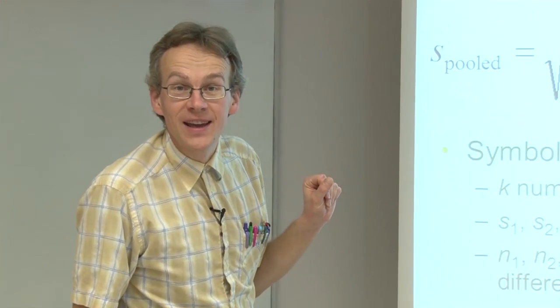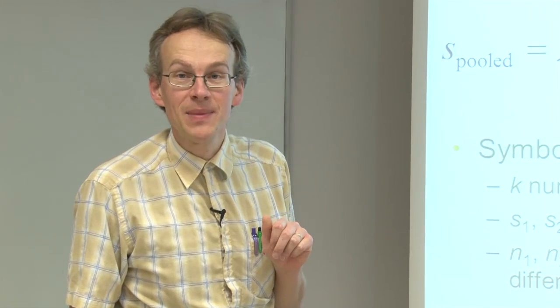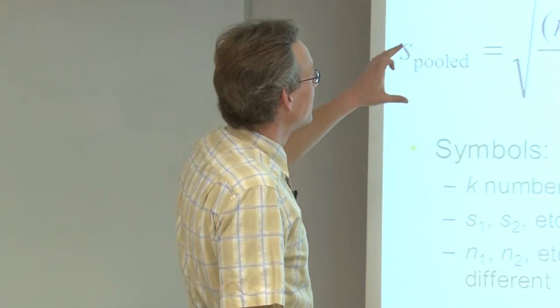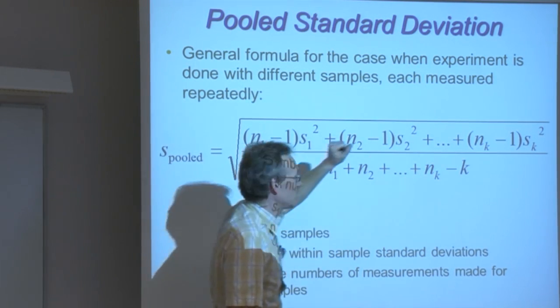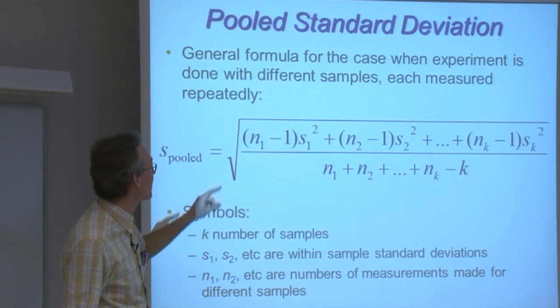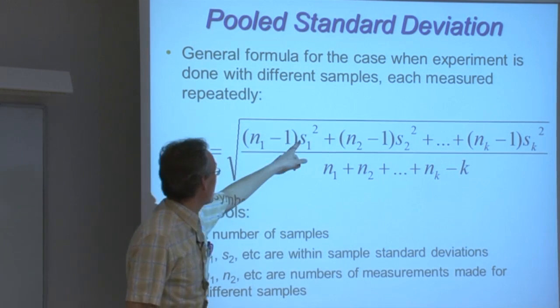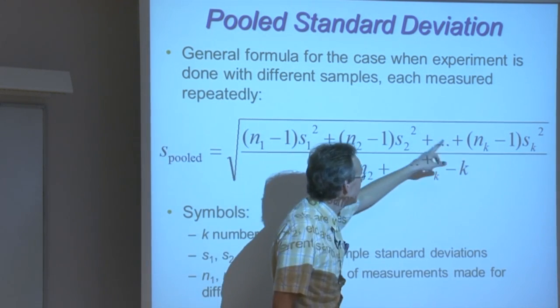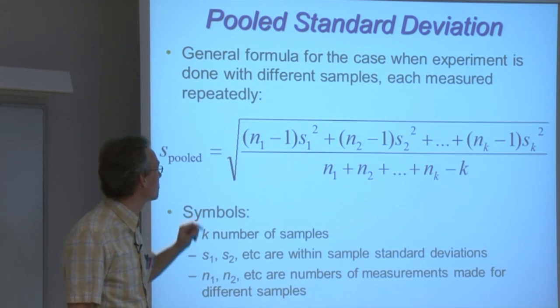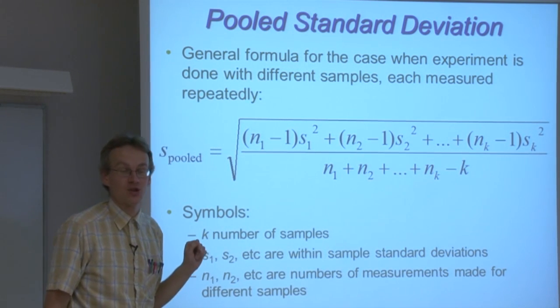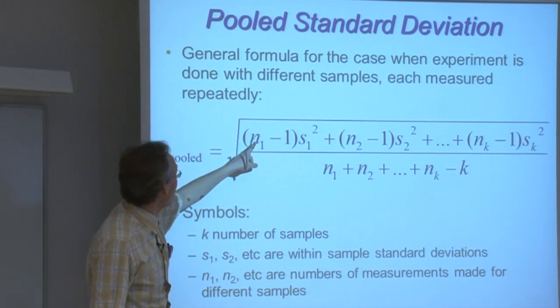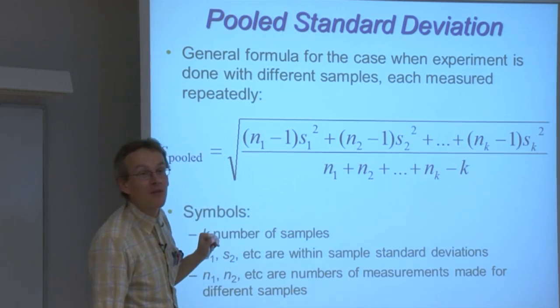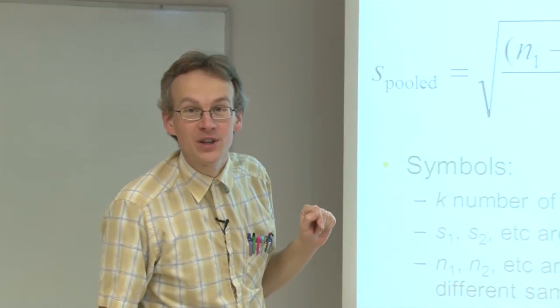In the case of pooled standard deviation, we always make measurements with several samples. And in this formula, these numbers here denote the sample numbers. We have altogether k samples, and each s is the standard deviation of that particular sample. S1 is the standard deviation of the first sample, S2 of the second sample, and so on.